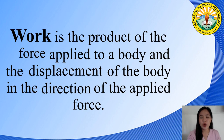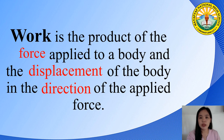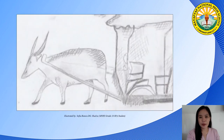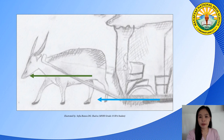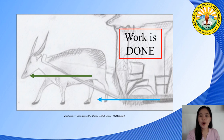Let's talk about work. Work is the product of the force applied to a body and the displacement of the body in the direction of the applied force. There are three important words to remember: force, displacement, and direction. The force applied to a body and the displacement of the body must be in the same direction for work to be done. For example, a carabao applies force to a cart. The cart moves in the same direction as the force applied by the carabao. Therefore, work is done.